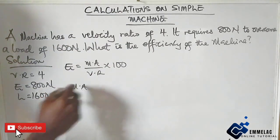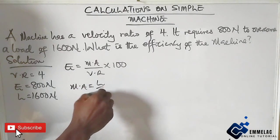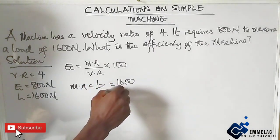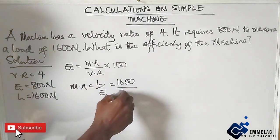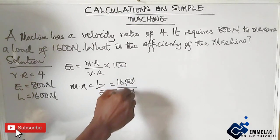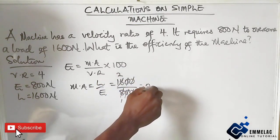Mechanical advantage equals load over effort. Our load here is 1600 Newton over 800 Newton, so the zeros cancel and 8 divides giving us 2. So our mechanical advantage is 2.